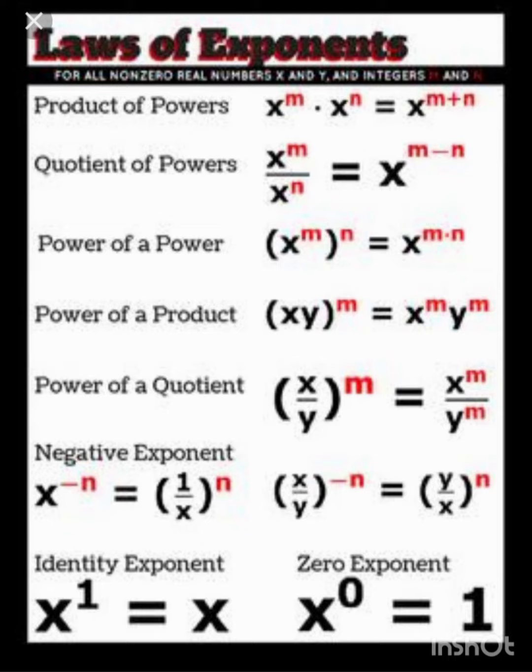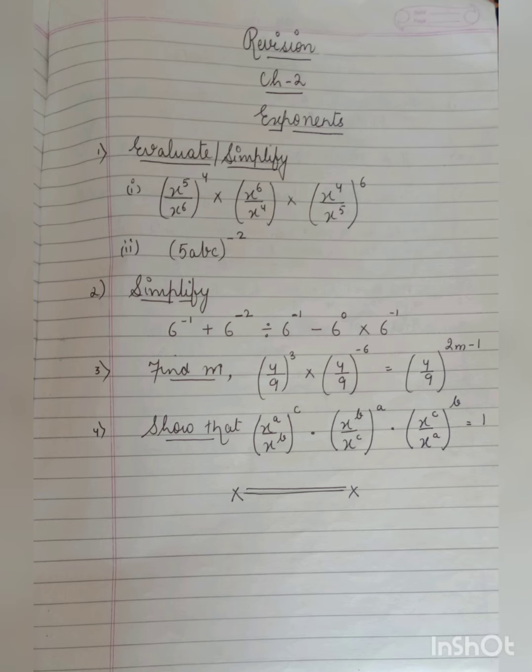Now let's have some questions for revision. Number one, evaluate. Simplify. X to the power 5 upon X to the power 6 to a common power 4, multiplied by X to the power 6 upon X to the power 4, multiplied by X to the power 4 upon X to the power 5 upon X to the power 6.